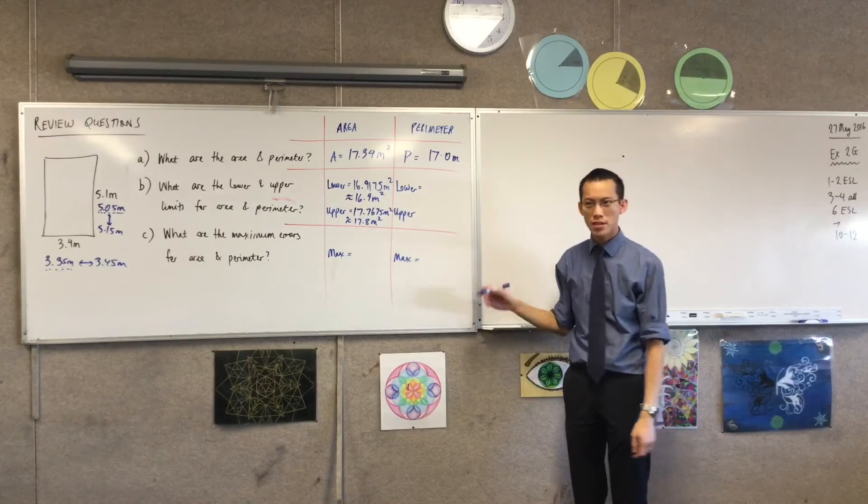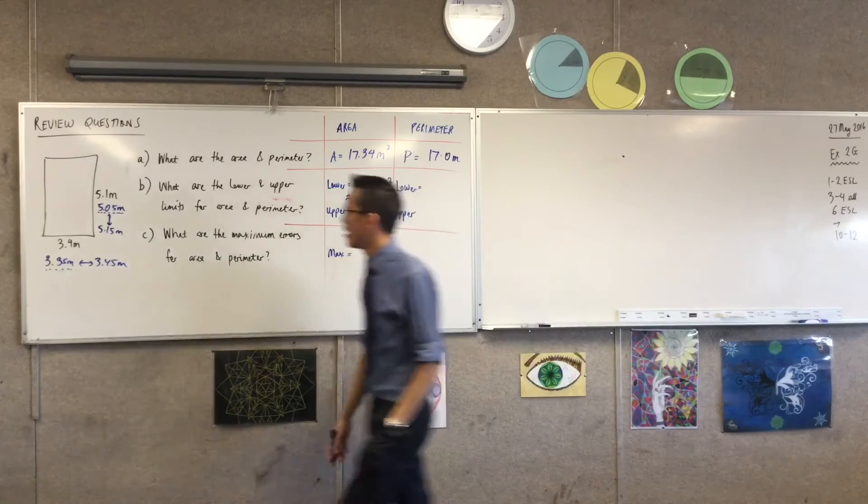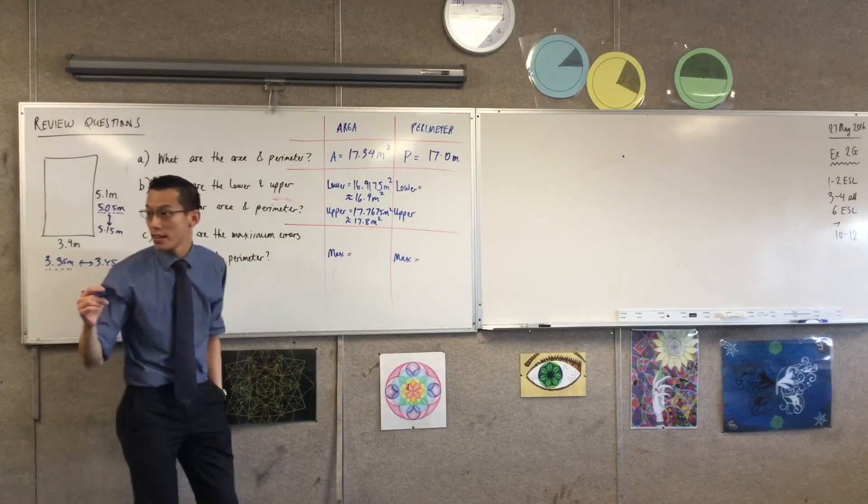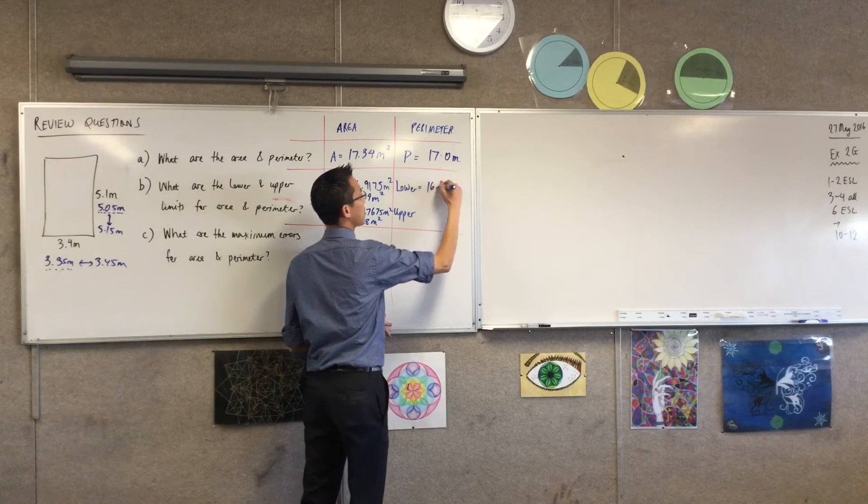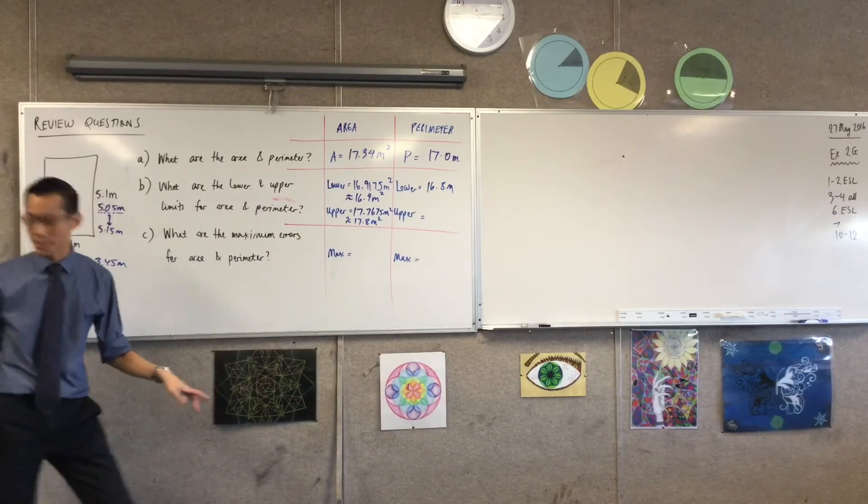That was area, can we get some perimeter measurements now? These should be easier. 16.8. And upper, someone else? 17.2. Okay, cool.